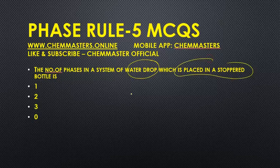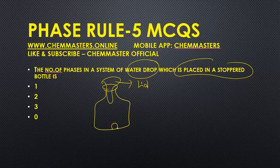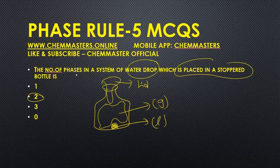Now the fourth question: the number of phases in a system of a water drop placed in a stoppered bottle. Here I'm drawing a stoppered bottle with a lid. We have a liquid drop inside, so that gives us one phase. The remaining space in the stoppered bottle is occupied by gas, so that gives us a second phase. Therefore, the number of phases equals 2.